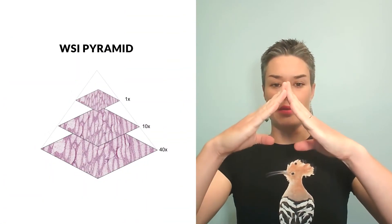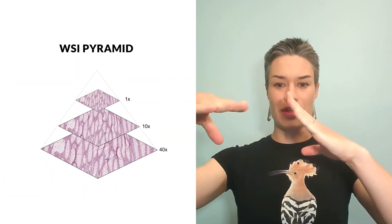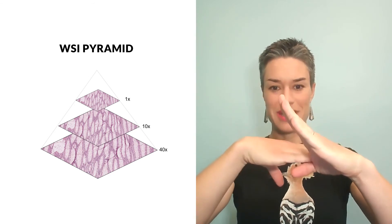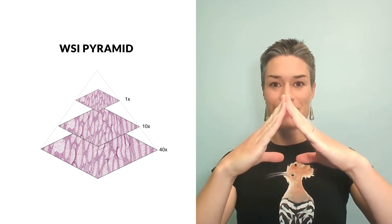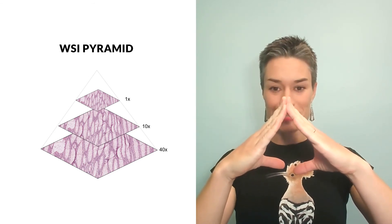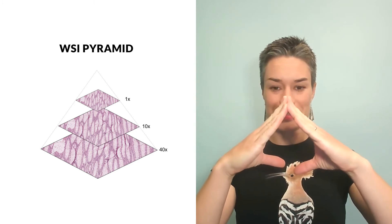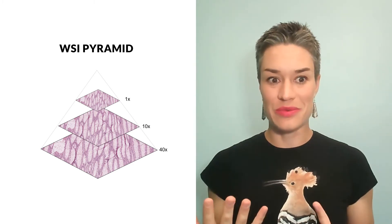So it's like a pyramid — you cut it at different levels: low magnification, then higher and higher. You basically have not one image, but many images that give us the possibility to zoom in and zoom out. That's why they're so big. And how do you store that amount of data? And why do we even need to store it — can't you just capture it and get rid of it?